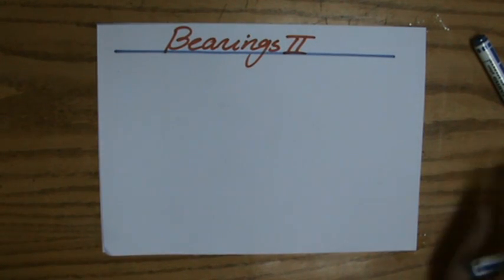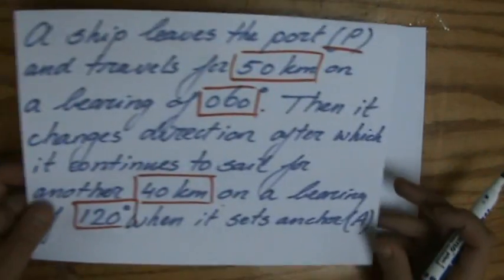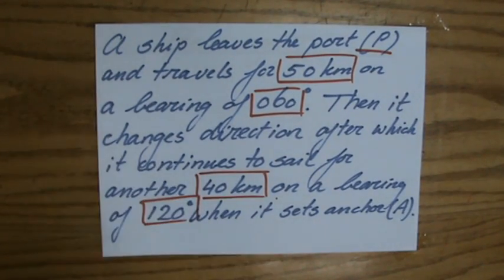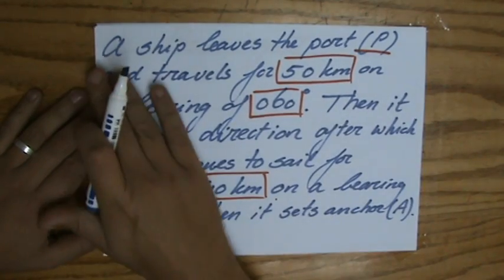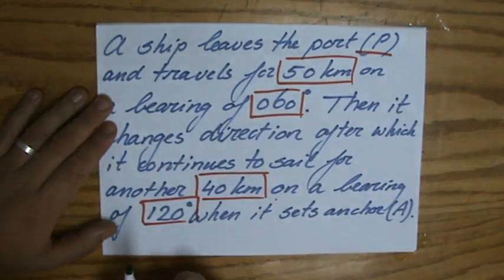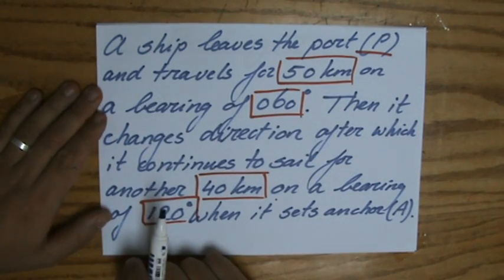We're going to have a look at a typical example of a question involving bearings. I've written down a question and already highlighted the important information. So it says a ship leaves the port P and travels for 50 kilometers on a bearing of 060 degrees.